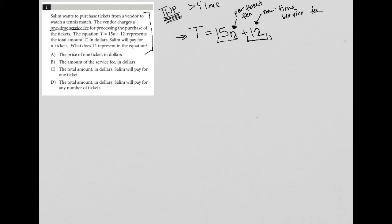So let's look at the answer choices and see which one matches with that idea. Choice A says the price of one ticket in dollars. That's definitely not true because that's the 15. That's why it's multiplied by N. Choice B, the amount of the service fee in dollars. I like that answer. So I'm going to circle it. I'm pretty sure that's the correct answer. But let's just read the other ones just to make sure.